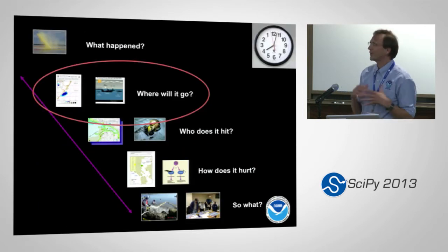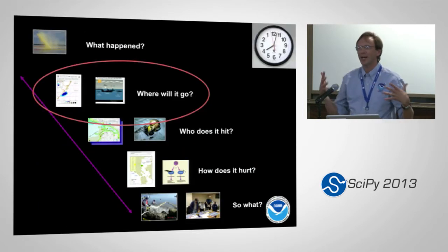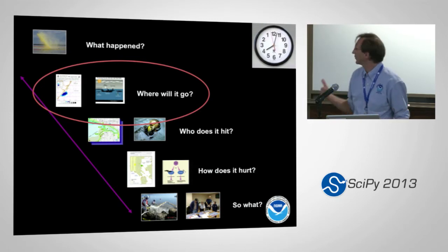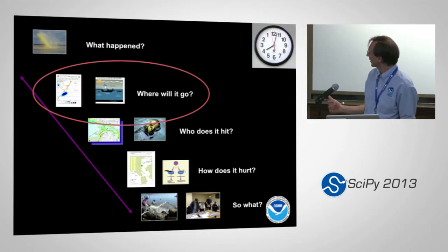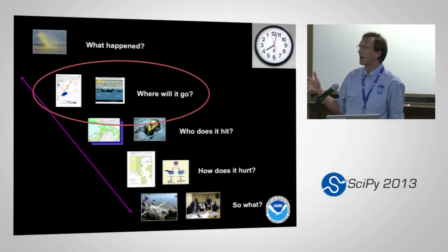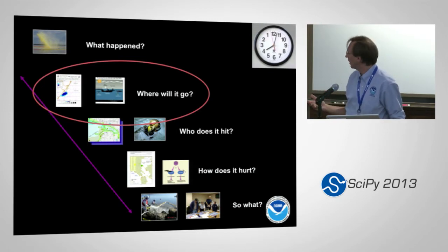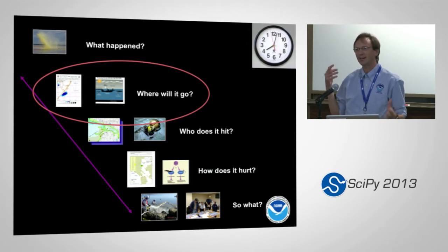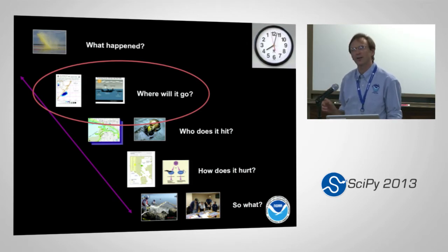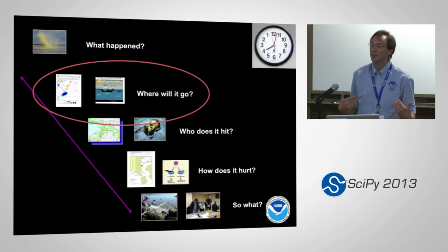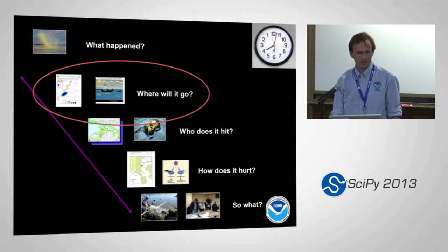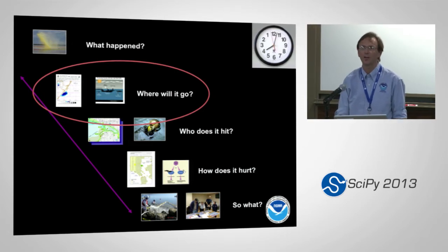We think about how we answer questions about spills in this framework: What happened? Where will it go? Who does it hit? How does it hurt? The 'where will it go' part is what I personally do most of my work on, and that's what our model today is about — where is the oil going to go?